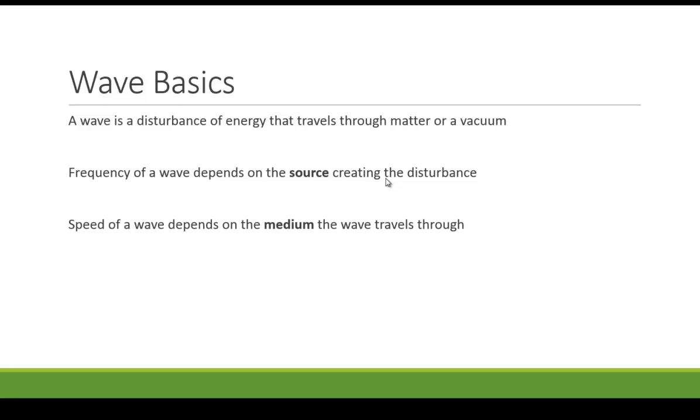The speed of a wave depends on the medium through which it travels. Light obviously would travel fastest through a vacuum, then through air, and then a little bit slower in glass and a little bit slower in water.